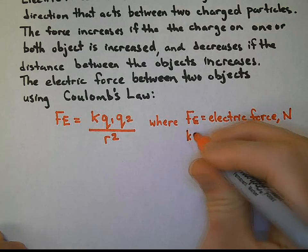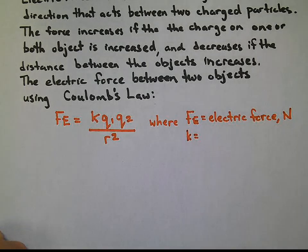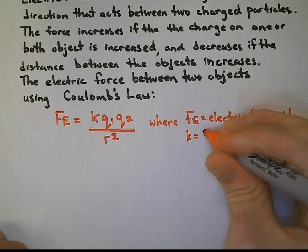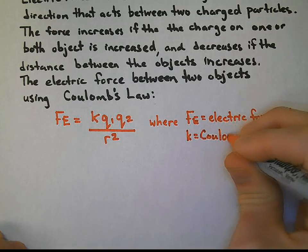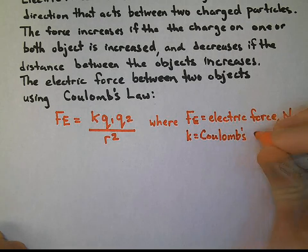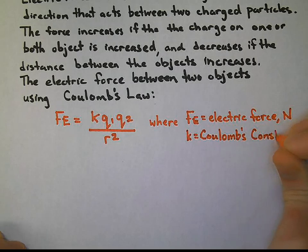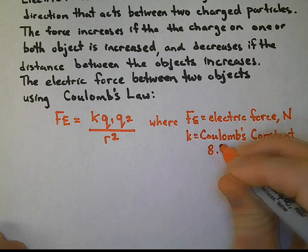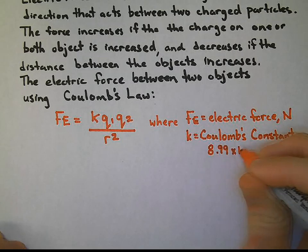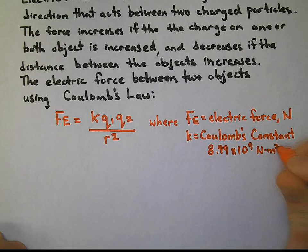K, do not get that mixed up with the spring constant. This is Coulomb's constant. It maintains the same value everywhere. Its value is 8.99 times 10 to the 9 newton meters squared per Coulomb squared.